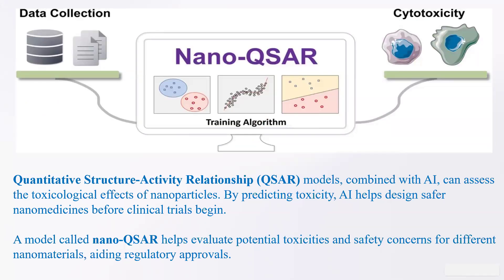Another application is nano-QSAR — quantitative structure-activity relationship models. When combined with AI, these models can assess the toxicological effects of nanoparticles. By predicting toxicity, AI can help design safer nanomedicines before clinical trials begin. The nano-QSAR model helps evaluate potential toxicities and safety concerns for nanomaterials, aiding regulatory approval through data collection, algorithm training, and cytotoxicity evaluation.